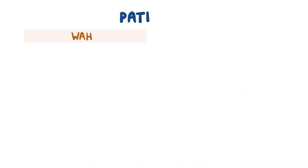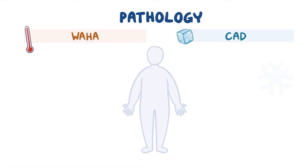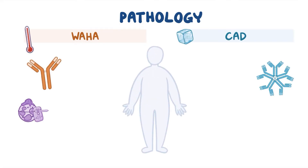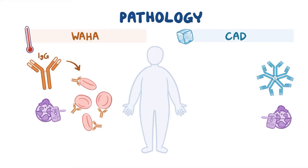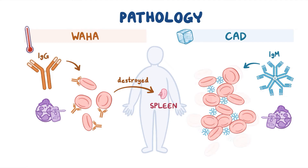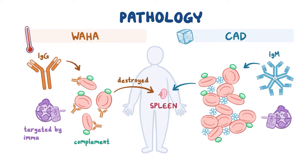In WAHA and CAD, the immune system produces autoantibodies, which are antibodies that target the body's own healthy immune cells. In WAHA, usually IgG antibodies tag the red blood cells, which are then transported to the spleen to be destroyed. In CAD, usually IgM antibodies tag red blood cells, causing them to clump together or agglutinate. Tagged red cells bind complement, one of the defense mechanisms present in the blood, and they become targets for destruction by immune cells.